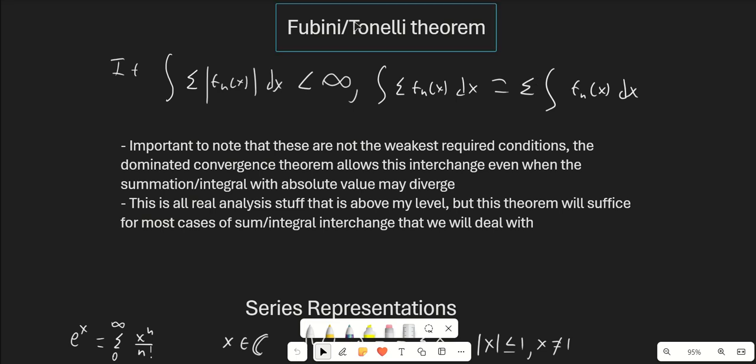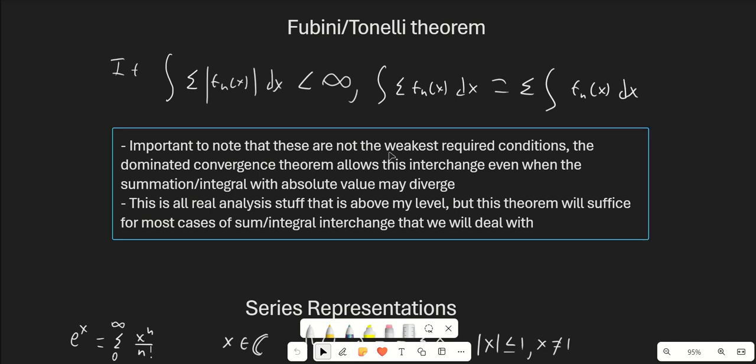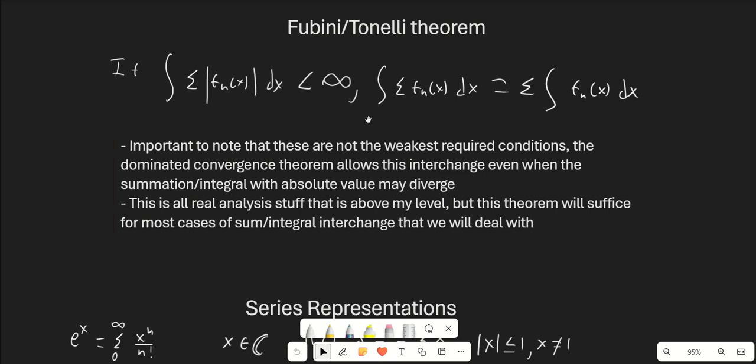This is also called the Tonelli theorem: if f_n of x is always greater than 0, then throwing on those absolute value bars doesn't change anything, so we can interchange the sum and the integral no matter what, as long as the original integral converges. One thing to note is that these are not the weakest required conditions — the dominated convergence theorem allows this interchange even when the summation or integral with absolute value may diverge — but this is real analysis that's a bit above our level, so we'll deal with this theorem, which will cover us for pretty much any situation.